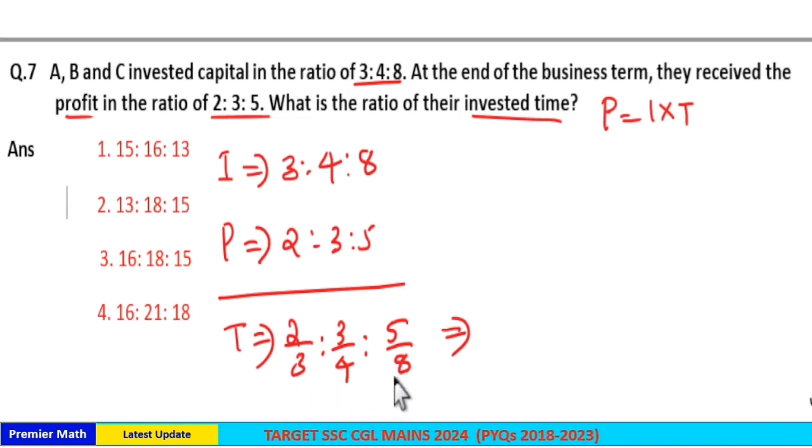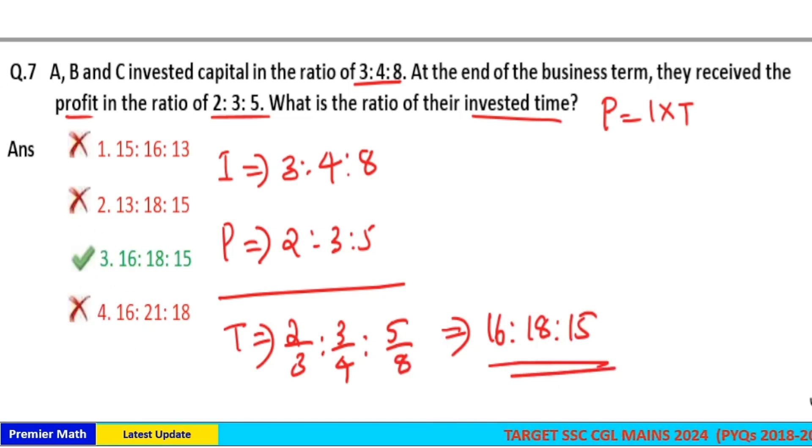So 2/3 into 24 means 3 into 8 is 24, so 8 into 2 is 16. Here 4 into 6 is 24, 6 into 3 is 18. And 3 into 8 is 24, 5 into 3 is 15. So 16:18:15. Option 3 is your answer.